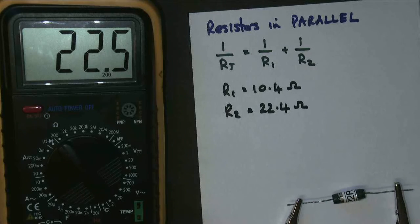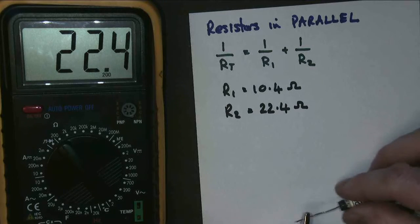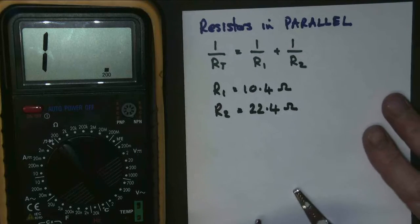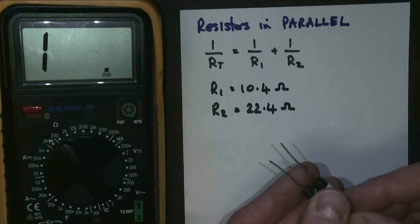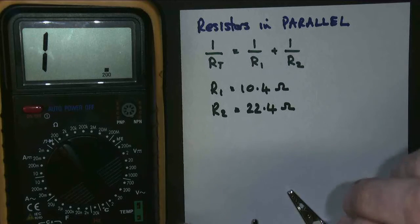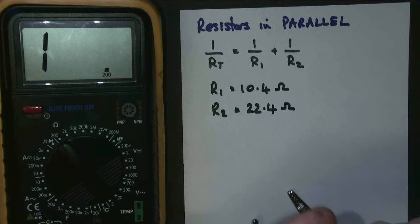And now we're going to connect them together into parallel. So we take our two resistors. We put them next to each other. Just twist the ends up. And twist the other ends up. So now they're in parallel.